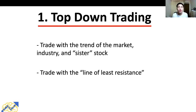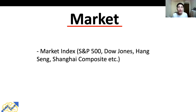The first trading rule is top-down trading. Jesse Livermore believed that as traders in the stock market, we want to trade with the trend of the market, the industry or sector, and a sister stock — or in Jesse Livermore's own words, trade with the line of least resistance. Trading with the trend of the market means trading in alignment with the US stock market index, such as the S&P 500 or the Dow Jones. For a Hong Kong stock, we'd look at the Hang Seng index, and for Chinese companies, the Shanghai Composite index.